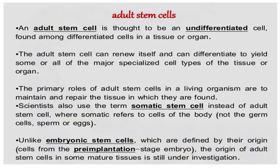Adult stem cells can renew themselves and can differentiate to yield the specific cell types of tissue and organs. They have self-renewal properties and unlimited cell growth properties. The primary role of adult stem cells in a living organism is to maintain and repair the tissue in which they are found. Scientists also use the term somatic stem cells instead of adult stem cells, where somatic cells refer to the cells of the body.